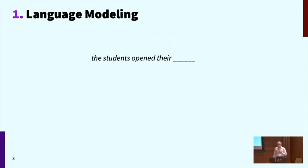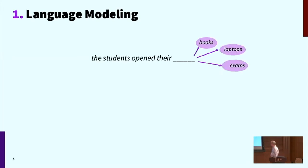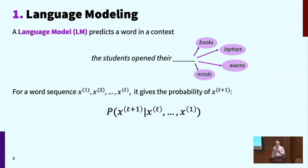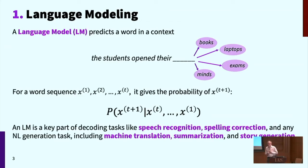The idea of language models is that in a context we want to predict the probability of different words occurring. So if the context is 'the students open there,' there are likely words to appear like books, laptops, exams, minds, various words. We can put a probability distribution over what words will appear in a particular context. This very simple notion of a probability model over words has been incredibly influential in all areas of speech and natural language processing — anywhere where you want a good model of what word sequences sound natural, or information to help decode in speech recognition. Everybody everywhere uses language models.